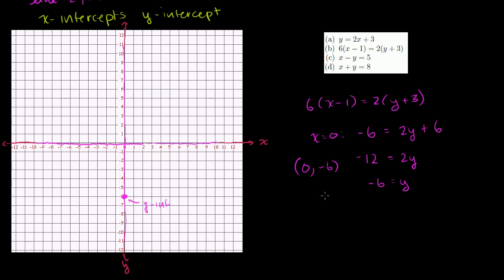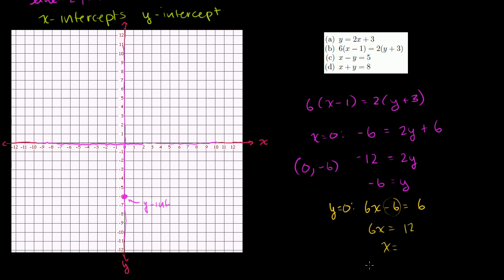Now let's find what happens when y = 0. Going back to the equation and distributing: 6x − 6 = 2 times 0 plus 2 times 3, so 6x − 6 = 6. Adding 6 to both sides: 6x = 12. Dividing by 6: x = 2. So our x-intercept is the point (2, 0).